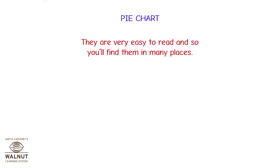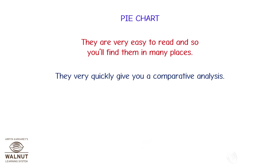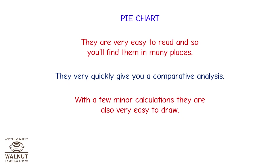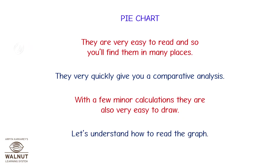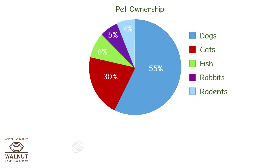Pie charts are very easy to read, so you'll find them in many places. They very quickly give you a comparative analysis, and with a few minor calculations, they are also very easy to draw. Let's understand how to read the graph. Look at this pie chart — it shows the kinds of pets that people have.